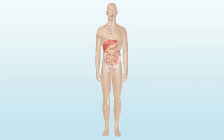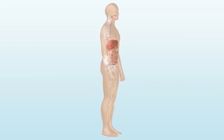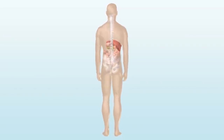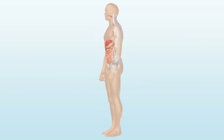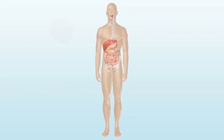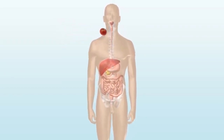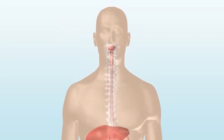Your digestive system consists of all the organs involved in breaking down the food you eat, absorbing nutrients, and eliminating waste products. When you take a bite of food, your digestive system is activated automatically.